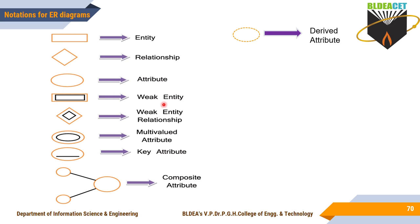Next is weak entity type — an entity type that doesn't have a key attribute. Such entity types are represented using double rectangles. The relationship that relates a weak entity type is represented using double diamonds. For multi-valued attributes — attributes which hold multiple values — a double oval is used. A key attribute, which is unique or distinct, is represented inside an oval with an underline.